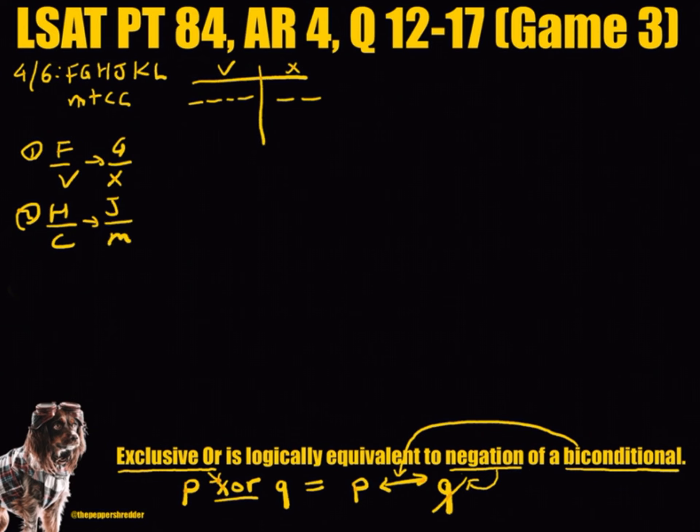Rule 3: Either F or H must be grouped with T, but not both. Rule 4: K cannot be grouped with C.